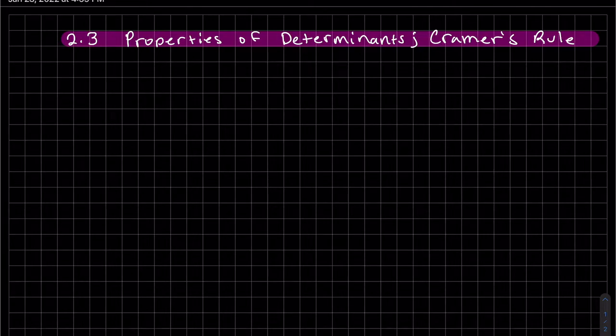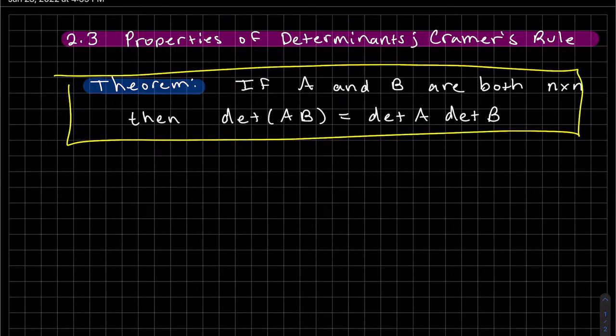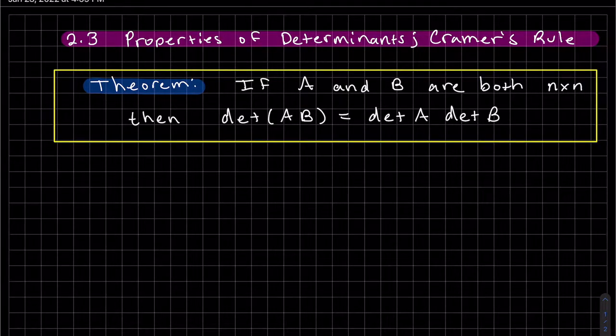This is properties of determinants and also we're going to learn about Cramer's rule. We're going to start off with the theorem. So the theorem is pretty simple. If A and B are both n by n then the determinant of AB is equal to the determinant of A times the determinant of B. You can distribute it basically.